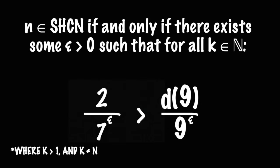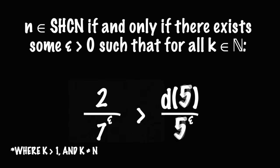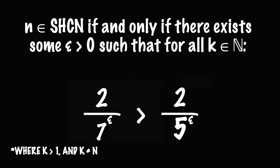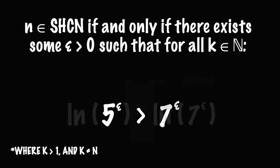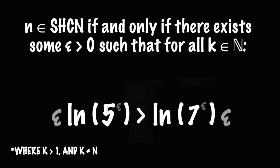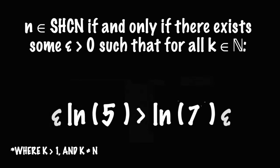So if we can choose any k as long as it's greater than 1 and not equal to n, then let's go ahead and choose 5. d(5) is also 2, and we can start rearranging the inequality a little bit. Divide numbers out, multiply numbers over, take a couple of natural logarithms. And since we stipulated that epsilon has to be greater than 0, that means that we can safely divide by epsilon without needing to worry about flipping the inequality symbol. And so we end up with this, the natural log of 5 is greater than the natural log of 7.